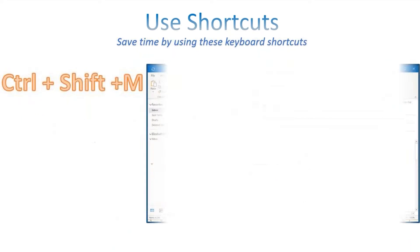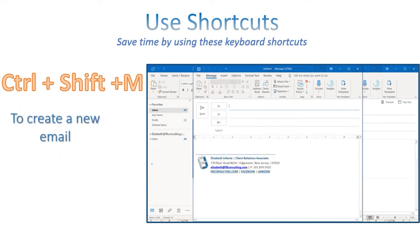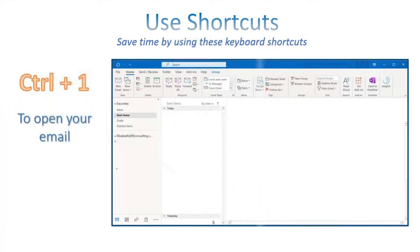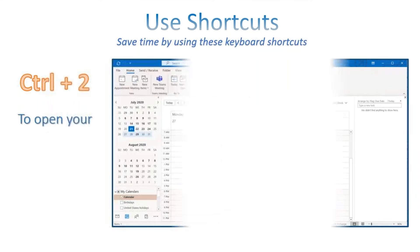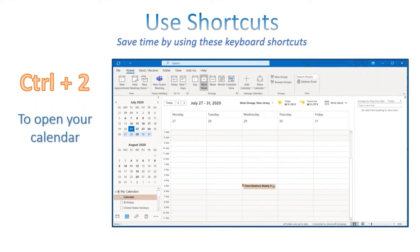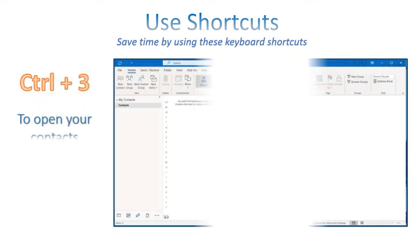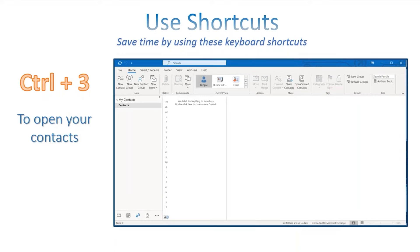Control+Shift+M will create a new email — not a reply, but a totally new email — and no matter what tab you're in, whether calendar or contacts, Control+Shift+M will create a new email. Control+1 opens your inbox, Control+2 opens your calendar, and Control+3 opens your contacts. We do have a longer list of shortcuts available — you can email us at webinars@updateconsulting to get that list.